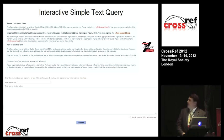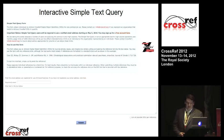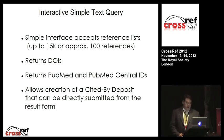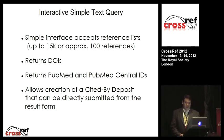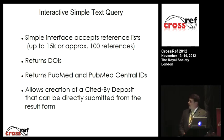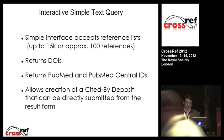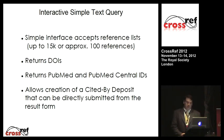Hopefully all of you are familiar with this. This is the interactive simple text query where you paste your references. This handles up to 15K worth of data — about 100 references, unless your references are extremely long, then it may be less. This returns DOIs as well as PubMed and PubMed Central IDs, and this interface also allows you to deposit cited-by deposits directly into the system from the form.